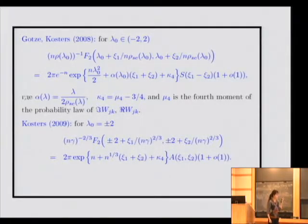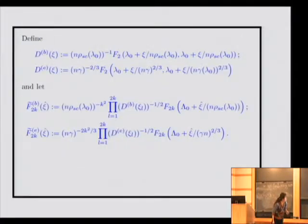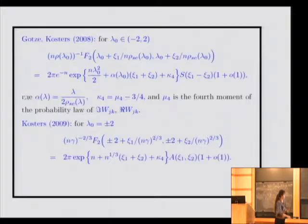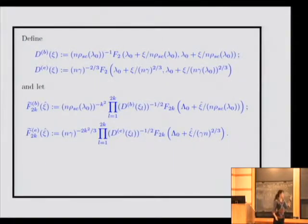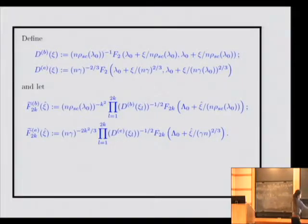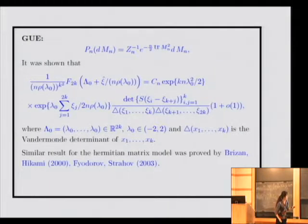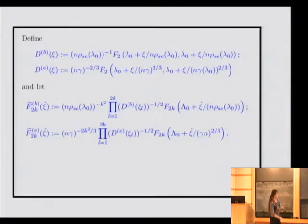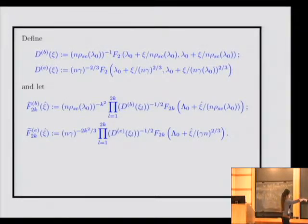We use the method of Grassmann integration and will speak about this method. Define d_B(ψ) and d_E(ψ). This asymptotic when we take ξ_1 equal to ξ_2. Let us define φ̃_{2k,B} and φ̃_{2k,E} such that we take F_{2k} and do some normalization — as in the Gaussian Unitary Ensemble case. We also divide by n ρ to the k-squared power, and by the product of d_B and d_E to the appropriate powers.